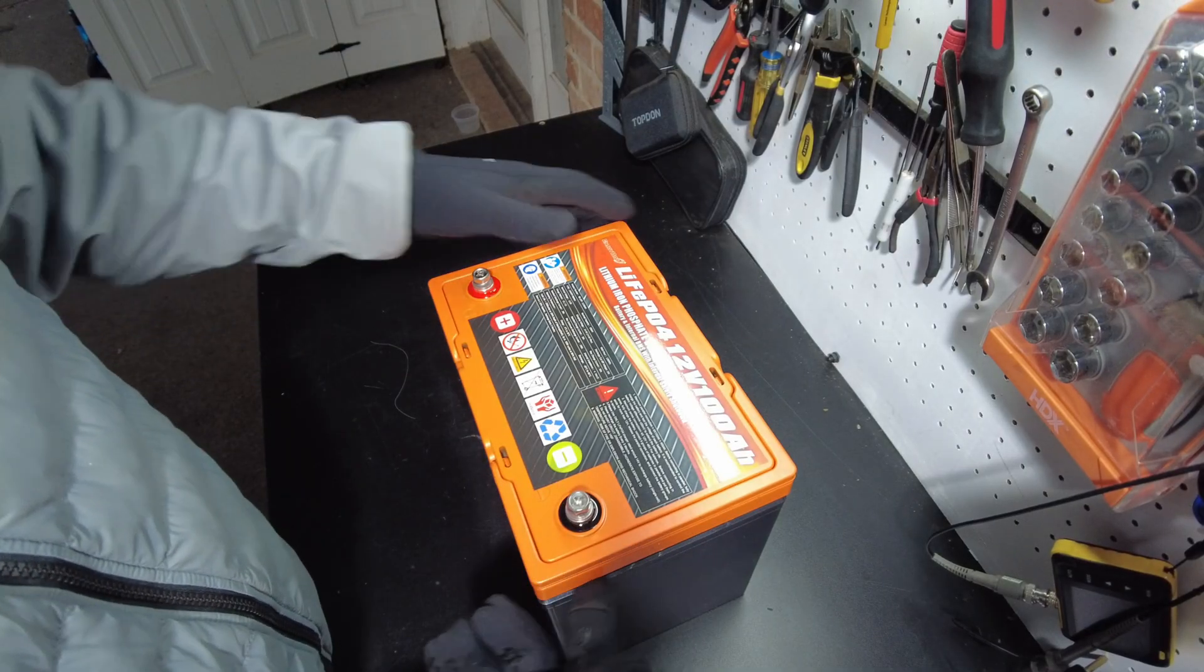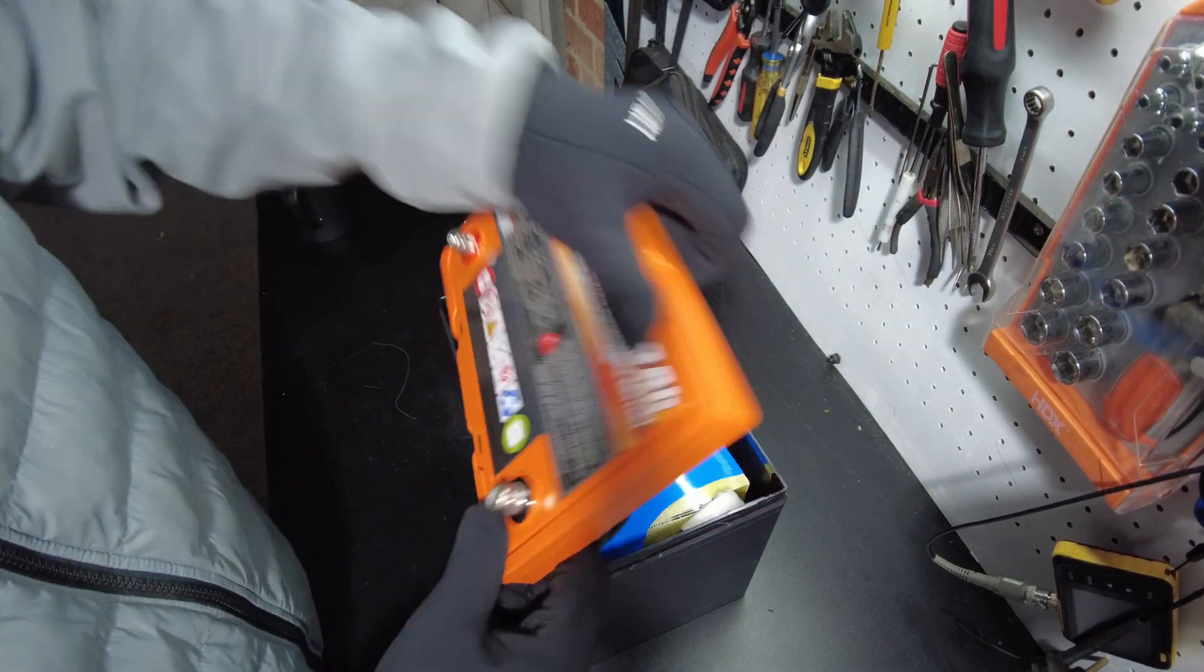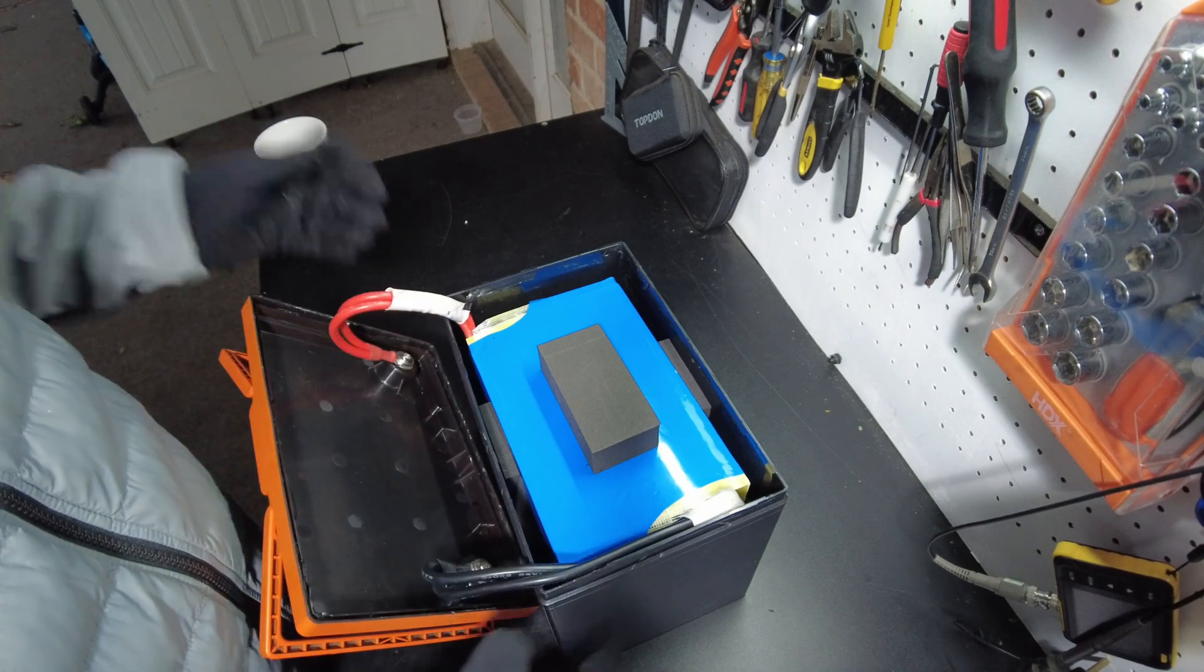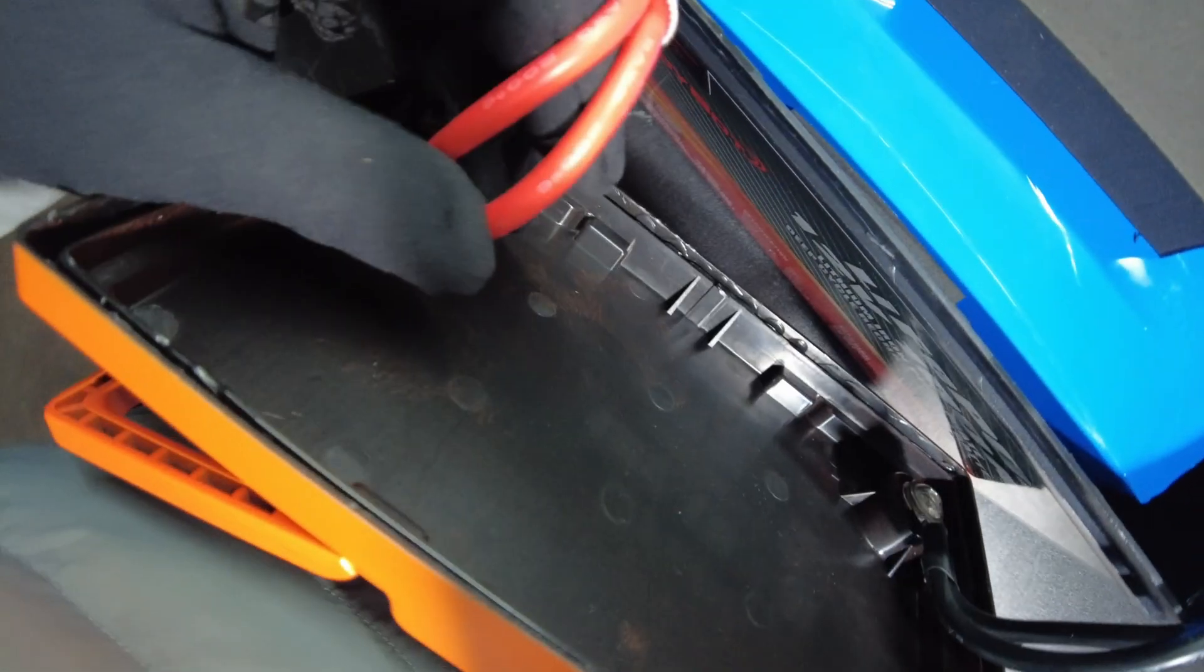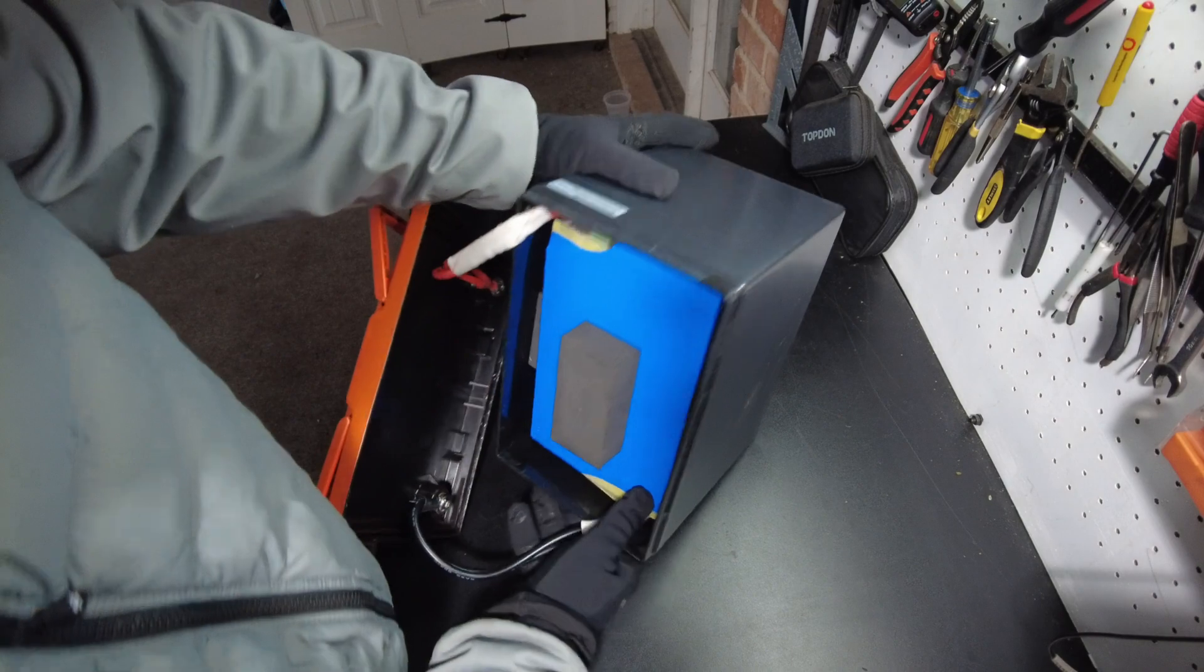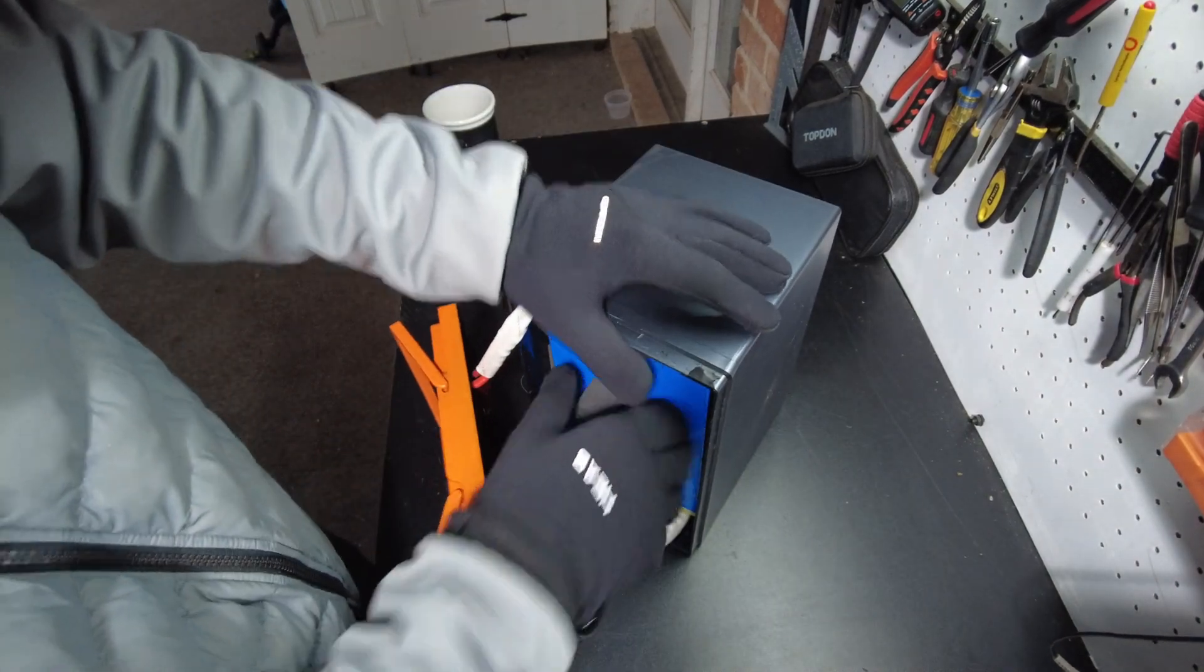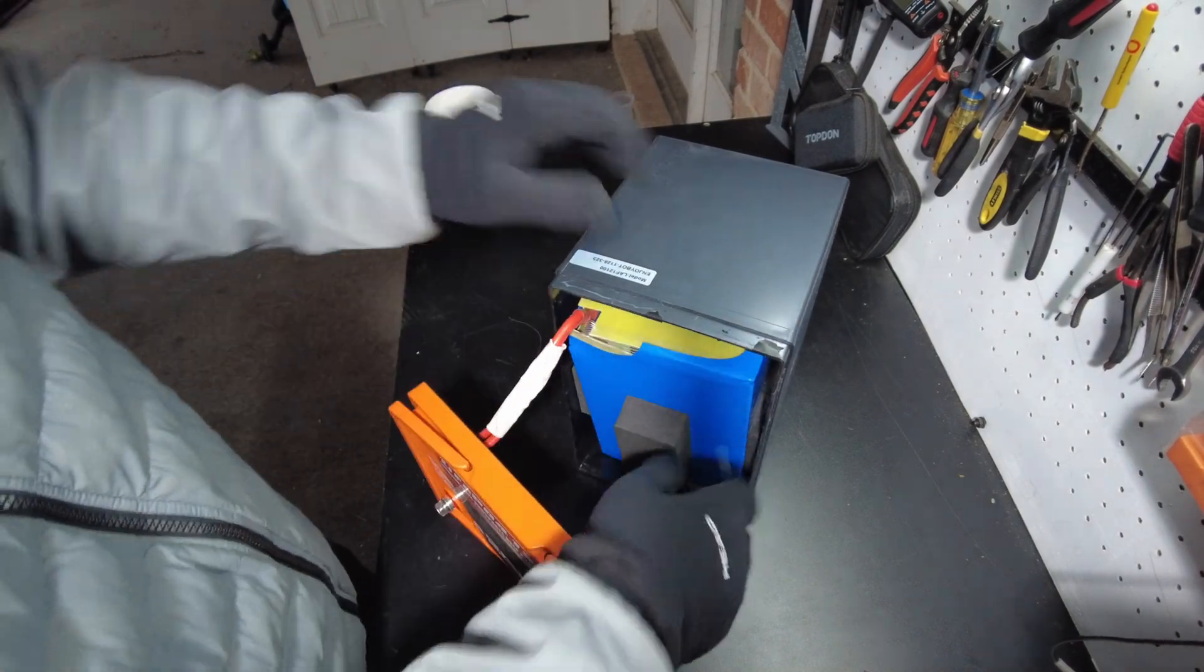Alright guys so I've got the lid cracked open. Let's go ahead and pull the rest of the way off. There we go. And what do we have here? We got double 8 gauge for the negative side and we've got double 8 gauge silicone wire for the positive. Let's see if we can get these out. There we go.